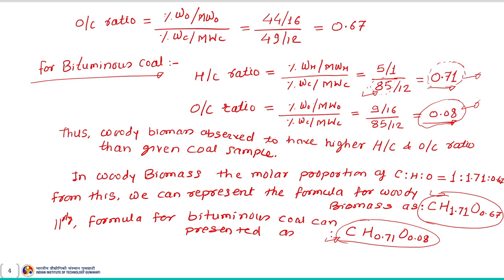I hope it is now clear how to calculate the H/C ratio and O/C ratio from the ultimate analysis composition of a given fuel sample, and once we know these ratios, how to represent the fuel formula in the form of CHO. Now let us move on to the next example.